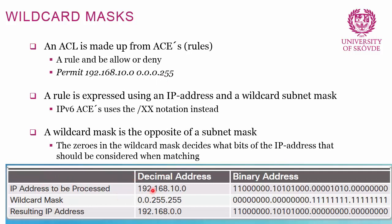Consider a packet coming in from 192.168.10.0, and a rule in the ACL matching that IP address with a wildcard mask of 0.0.255.255. That means only the first two octets must match, so any packet with a source IP starting with 192.168 will match, whether the remaining octets are 12, 20, 255, or anything else.